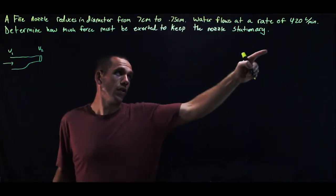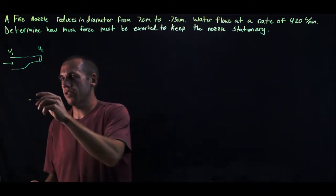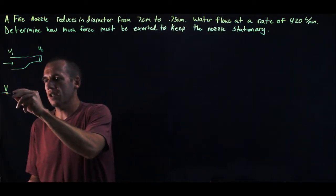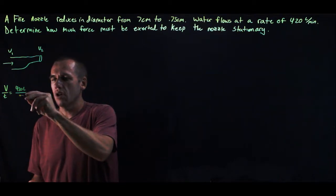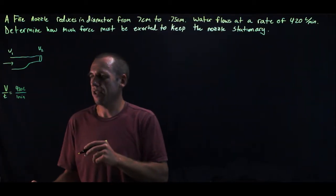We know the volume rate of flow is 420 liters per minute. V over T is equal to 420 liters over one minute. And if you do all the math on that...